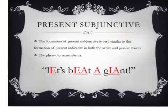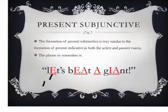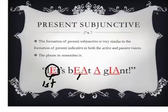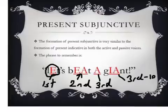The formation of the present subjunctive is very similar to the way we form the present indicative in both the active and passive voices. There's a phrase I want you to remember: 'let's beat a giant.' Notice how the vowels are highlighted — the 'e,' the 'ea,' the 'a,' and the 'ia.' They're highlighted because these are the vowel changes when you form the present subjunctive. All you do is change the stem vowel. For the first conjugation, you change the stem vowel to an 'e.' For the second, you change it from 'e' to 'ea.' For the third, you change the stem vowel to 'a.' And for the third io and fourth, you change the stem vowel to 'ia.'